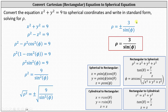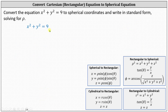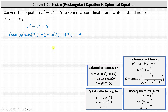Now let's take a look at a second way to perform this conversion. Starting with the rectangular equation, let's substitute rho sine phi cosine theta for x and rho sine phi sine theta for y. And now we'll go ahead and square.